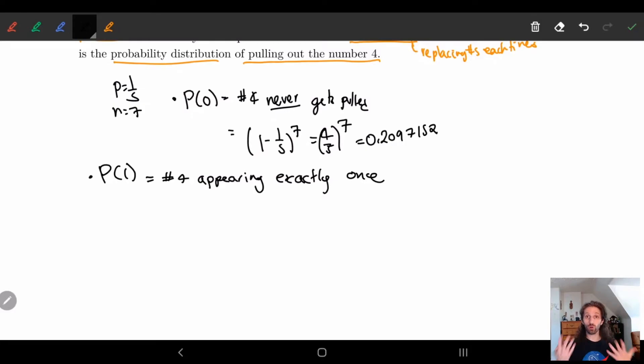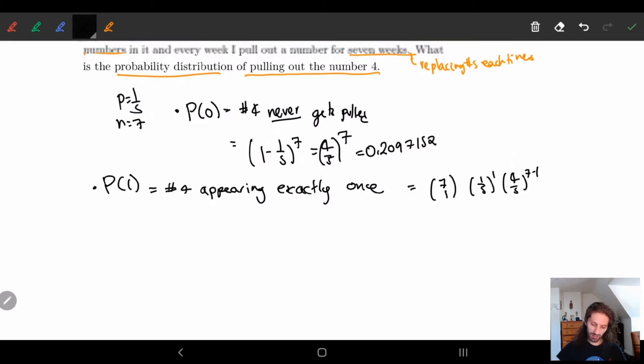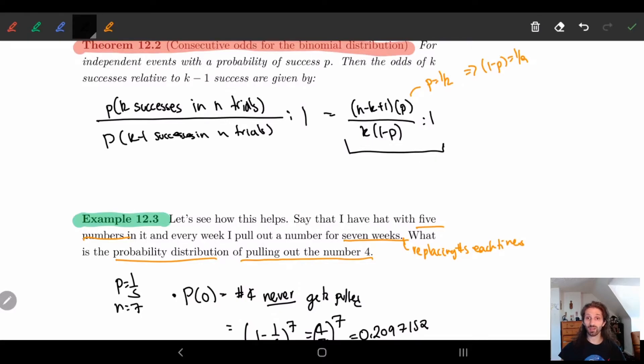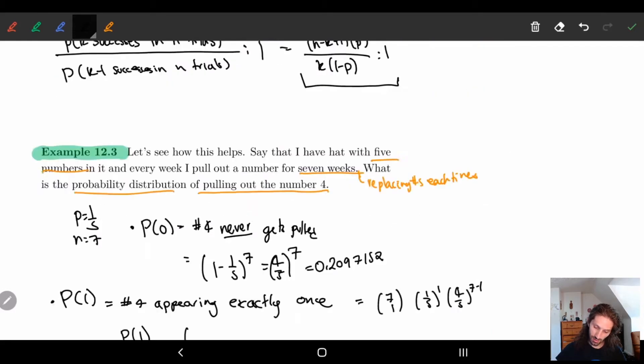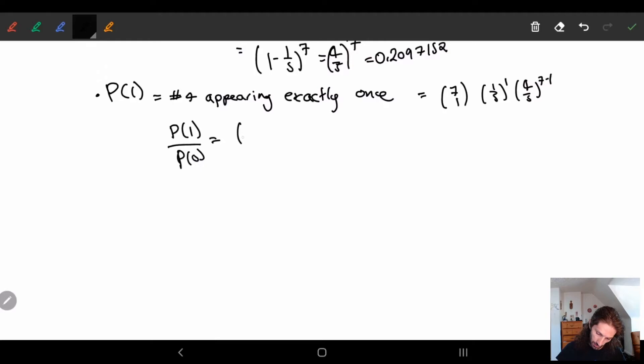Okay, so there's two ways we can kind of do this. We have the normal way of doing this, right? So the normal way is to choose seven, choose one, P is equal to one over five to the one, four-fifths to the seven minus one. So I could calculate this. Alternatively, we know from our last week that our odds are given by this. In other words, what I can just do is I know I can just calculate the ratio of P1 to P0. Now we know that this has to equal n minus k plus one times p over k times one minus p.